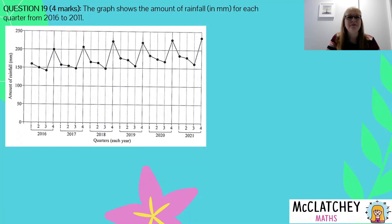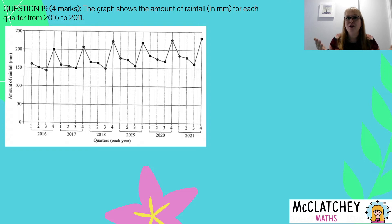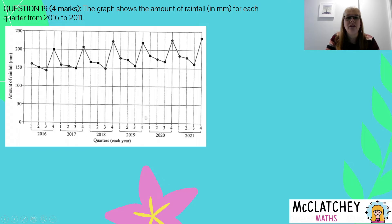We had two questions in. Our next question was question 19, and it was worth four marks. So we've moved out of multiple choice questions, which are all worth one mark each, and into short answer questions — the ones you need to show working for. The graph shows the amount of rainfall in millimeters for each quarter from 2016 to 2021. We can see 2016 at the bottom all the way up to 2021, with four quarters for each period. The rainfall is in millimeters, and it looks like the data is following some sort of pattern.